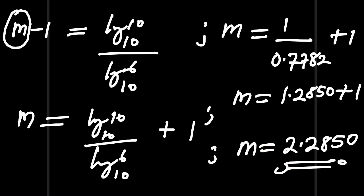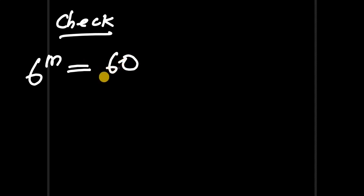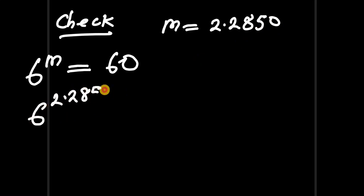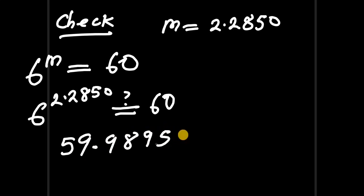Now let's check if our answer is correct. We go to the next slide and verify: 6 to the power of m should equal 60. Our value of m is 2.2850, so we compute 6 to the power of 2.2850. Inserting this into a calculator gives an approximate value of 59.9895, which rounds to 60. Our answer is confirmed.